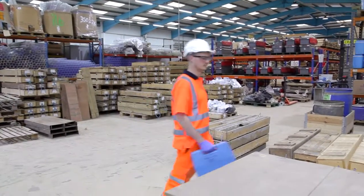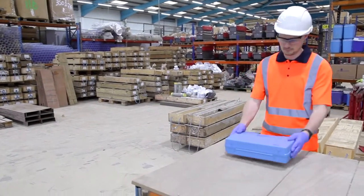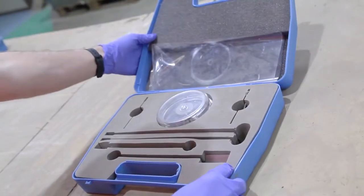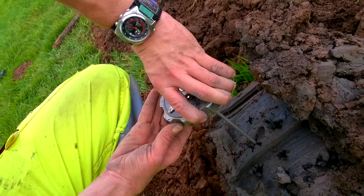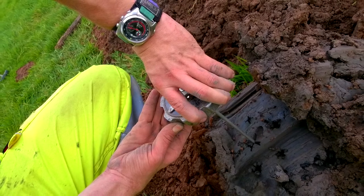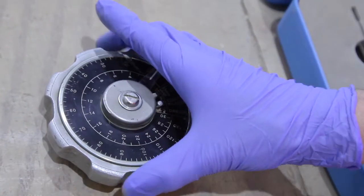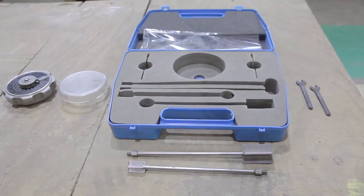The Hand Shear Vane is a small portable device for measuring the undrained shear strength of cohesive soils. Tests may be undertaken in situ or on intact samples of material. Avoid disturbed material as this will give misleading results.